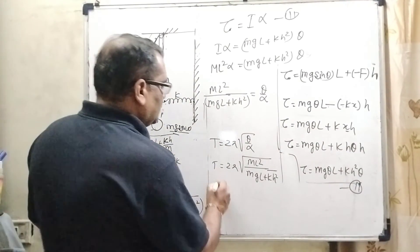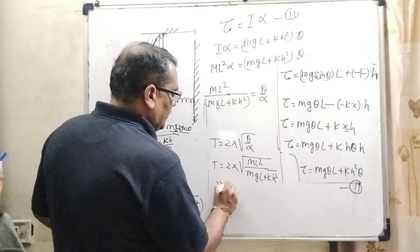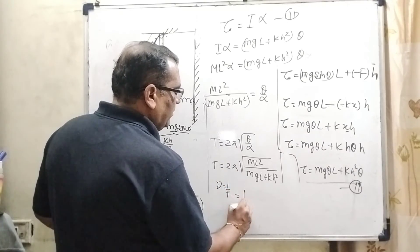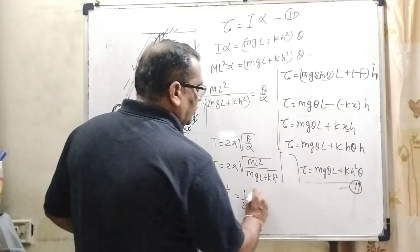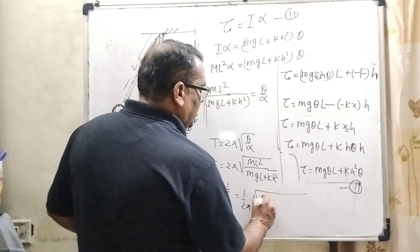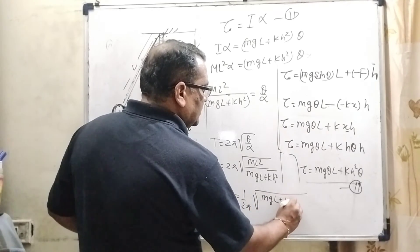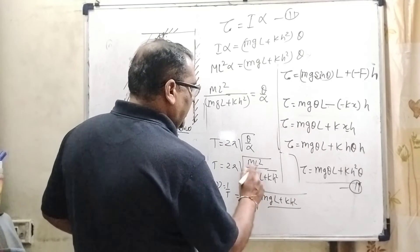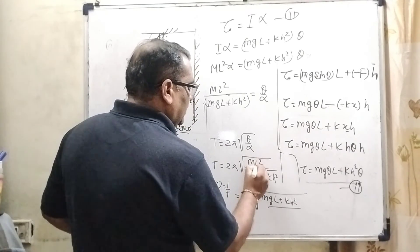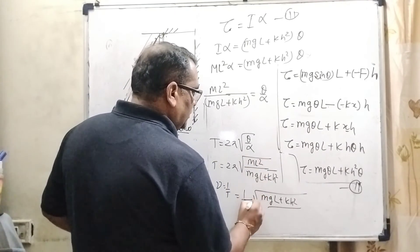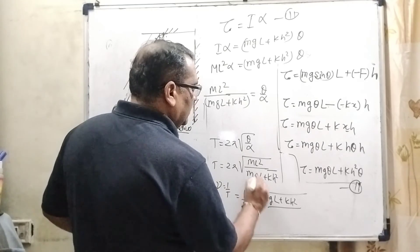Now, here we get the frequency. So, therefore, we know that frequency equal to 1 by T. So, therefore, 1 by 2 pi root MGL minus KH square. Here, L square get taken out from the root. So, therefore, become L.